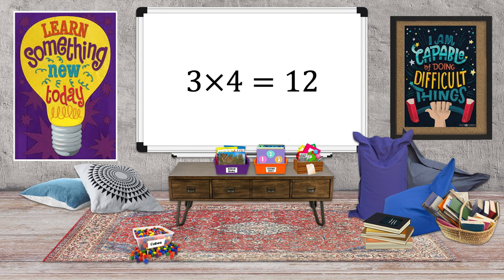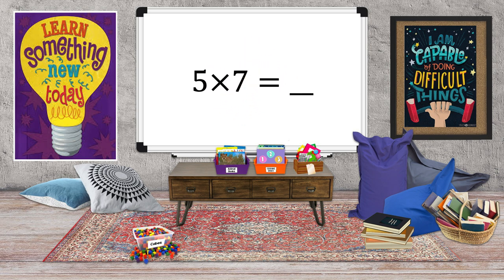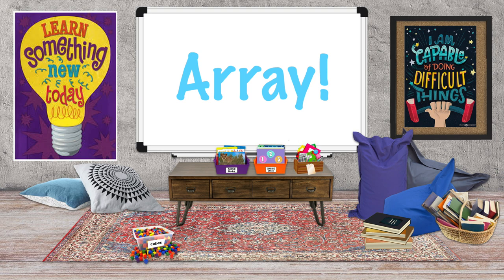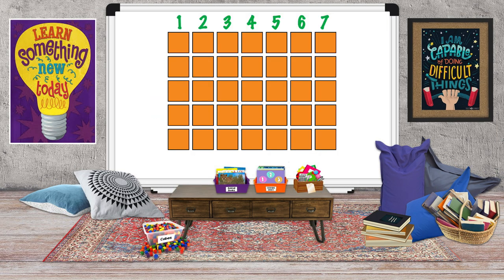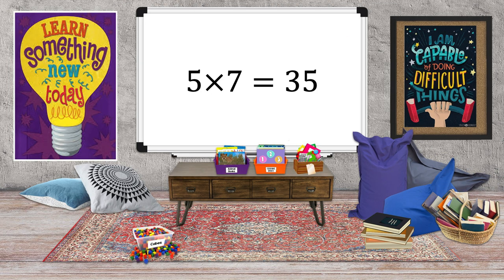Let's try one without a product and see if it still works. Here's our multiplication sentence: five times seven equals blank. Set up our array: five rows, seven columns. Here's our array. Let's skip count: seven, fourteen, twenty-one, twenty-eight, thirty-five. Five times seven equals thirty-five.